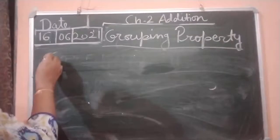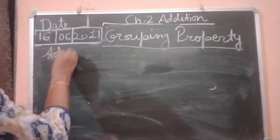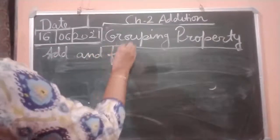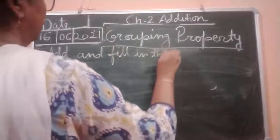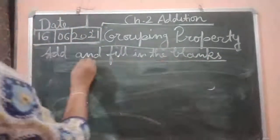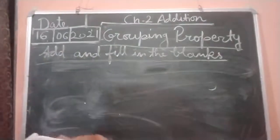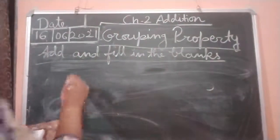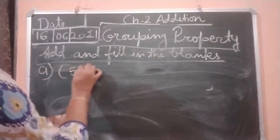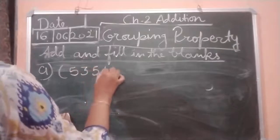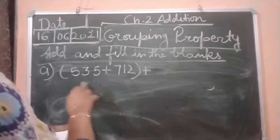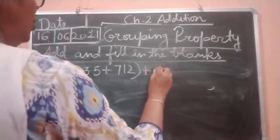Now first is A: add and fill in the blanks, children. So first we will do A: the first sum is 535 plus 712 in the bracket, then plus 122 and 3.